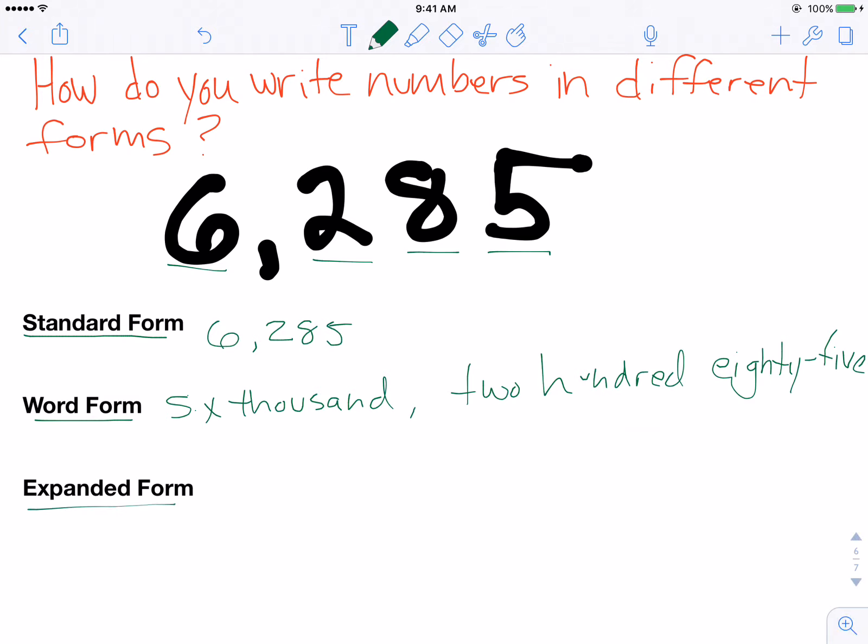Expanded form, there's kind of two different ways that expanded form can be written. But expanded form is using the values of each digit in the place that it's at. So for example, to start off with, we have a 6 in the thousands place. So we would start expanded form with 6,000.